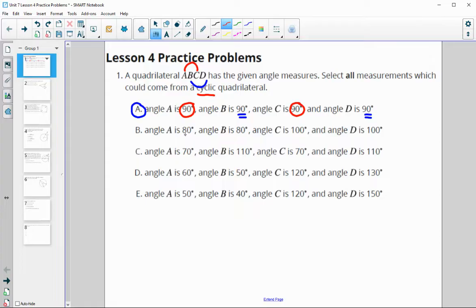In B, angle A is 80, C is 100, so those total 180. B is 80, D is 100, those total 180, so this is cyclic.